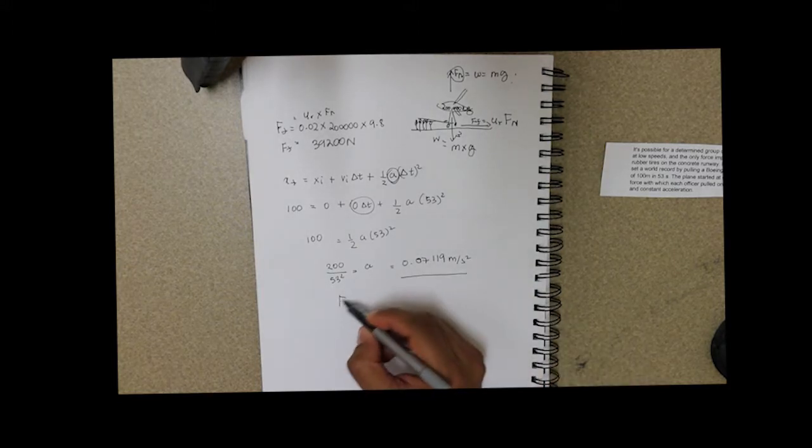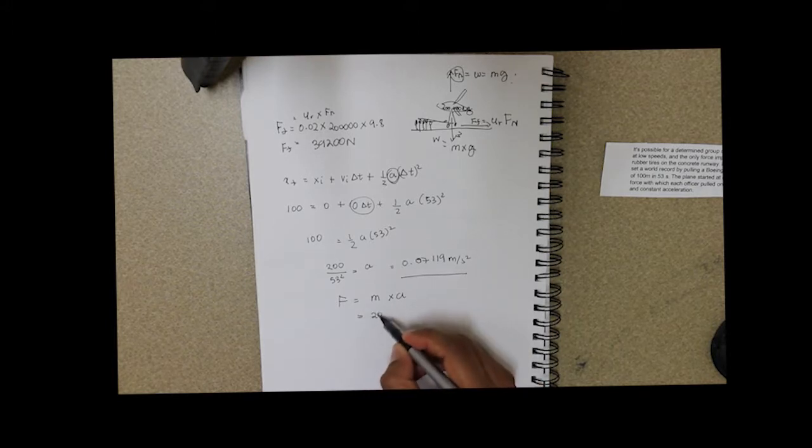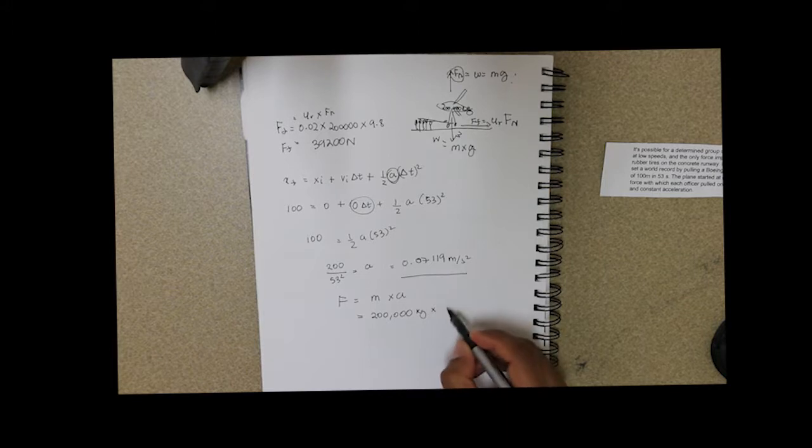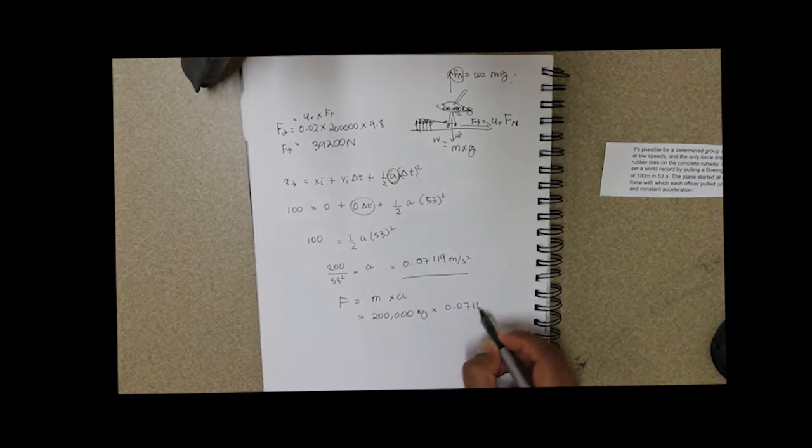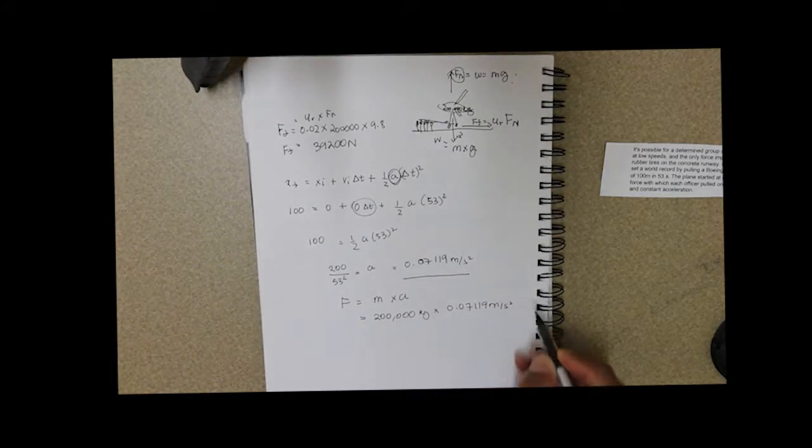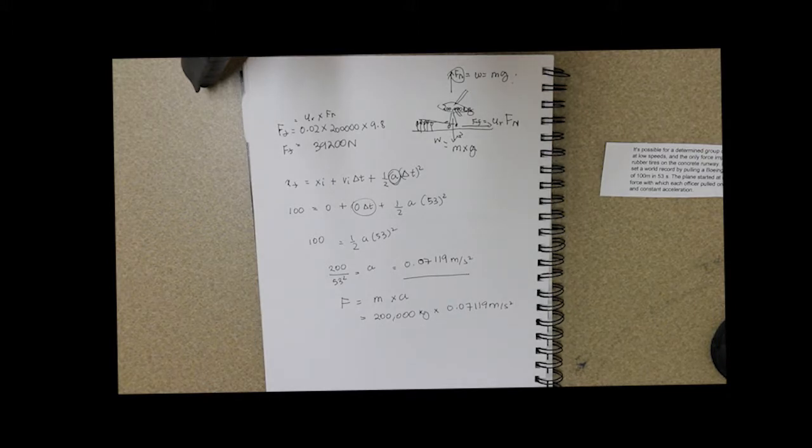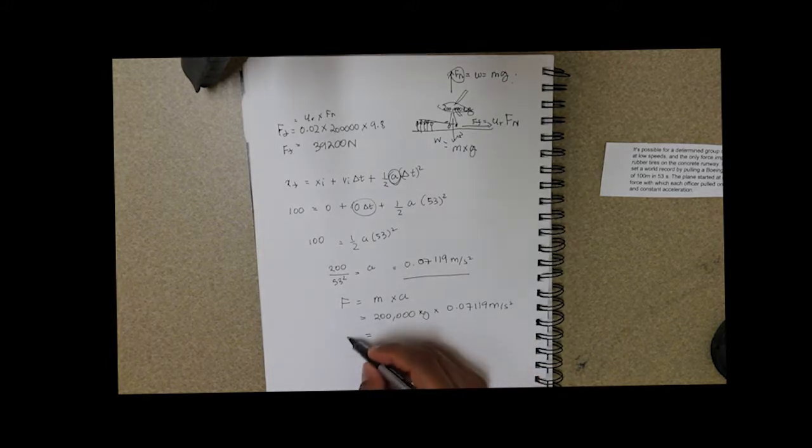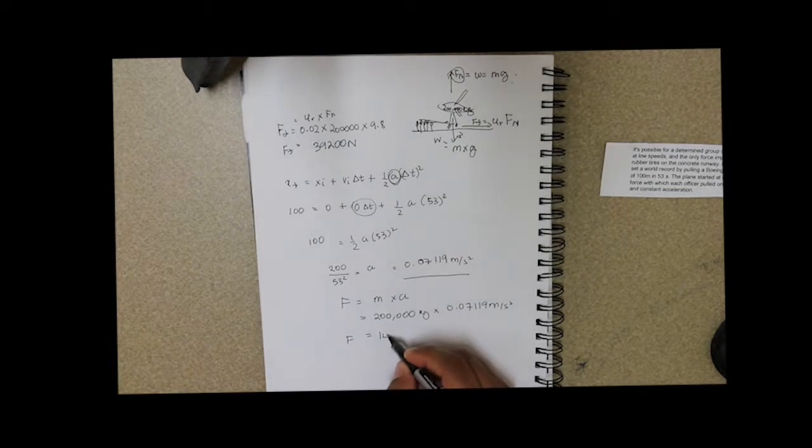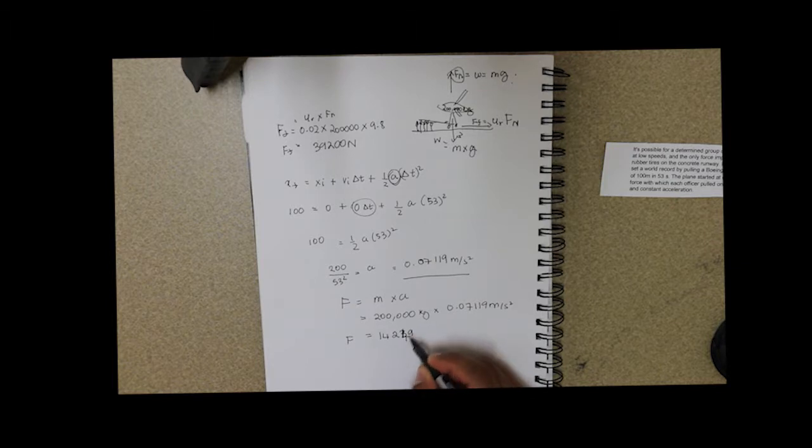So our force is equal to our mass times acceleration. So our mass is given by 200,000 kilograms times our acceleration of 0.07119 meters per second squared. So that force in the forward direction is 14,240 newtons approximately.